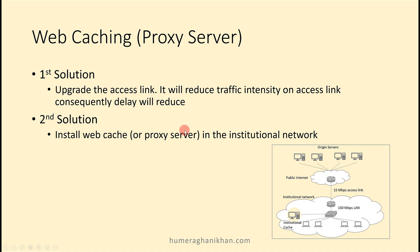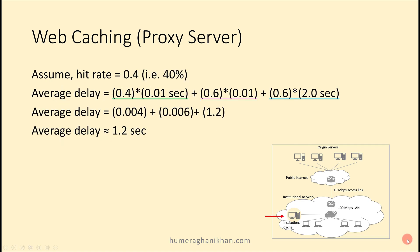To overcome this problem there are two solutions: replace the problematic access link with a higher bandwidth link, or install a cache inside the local area network. We will now examine quantitatively how installing a cache inside the LAN benefits us in terms of time.